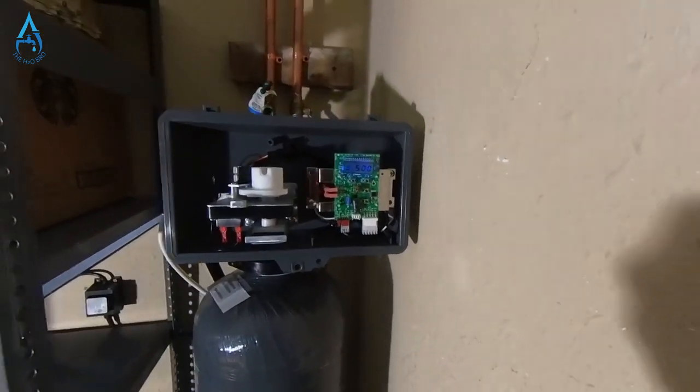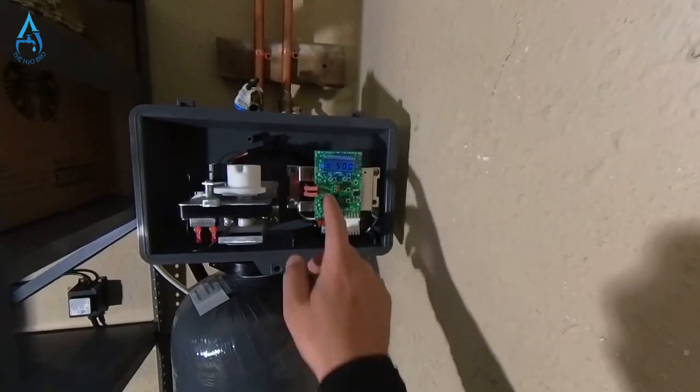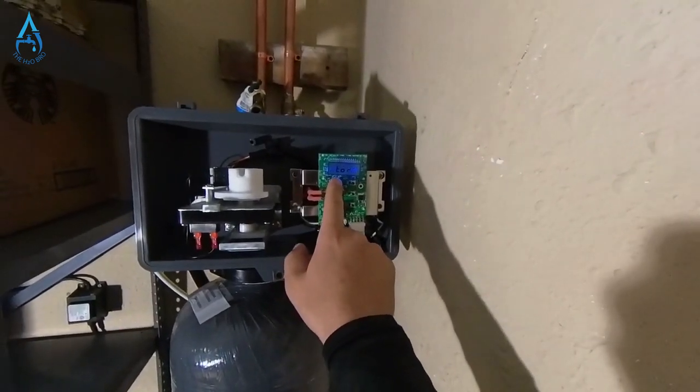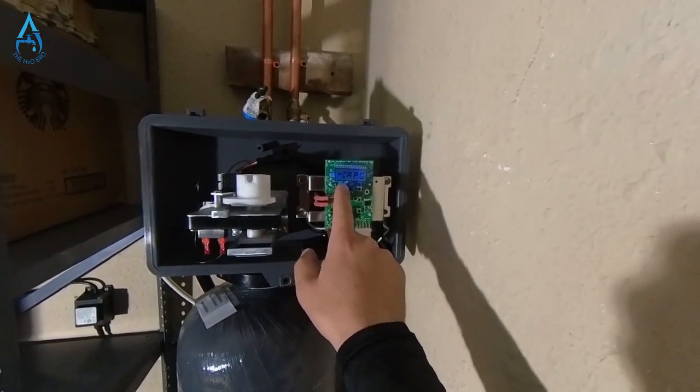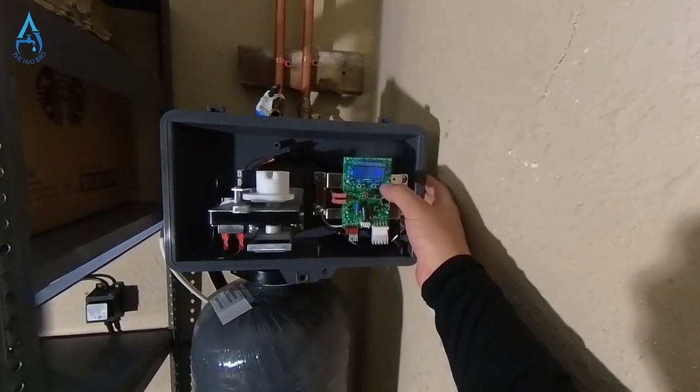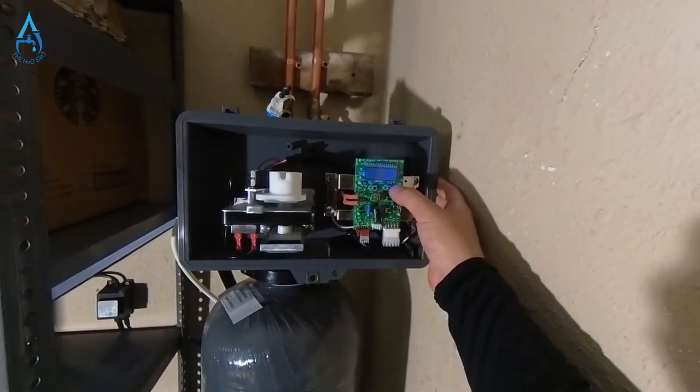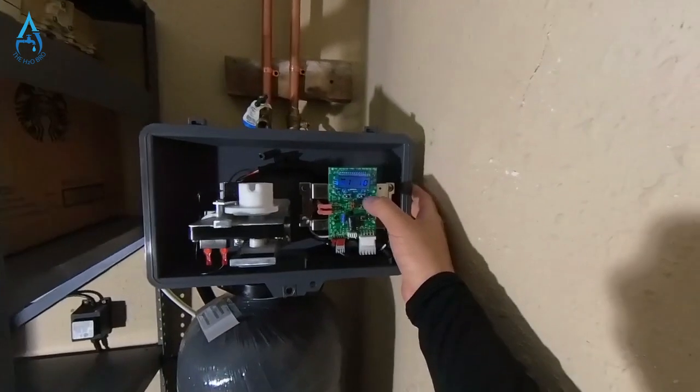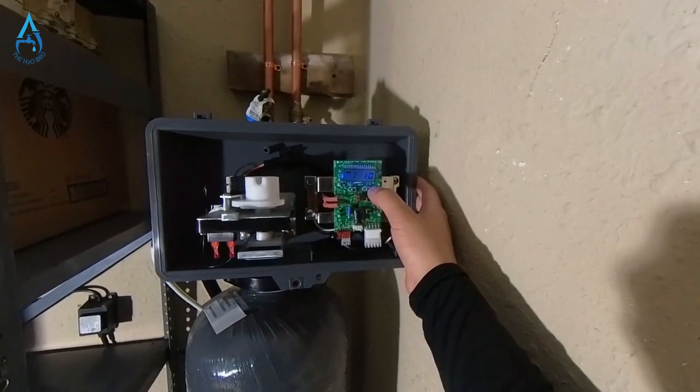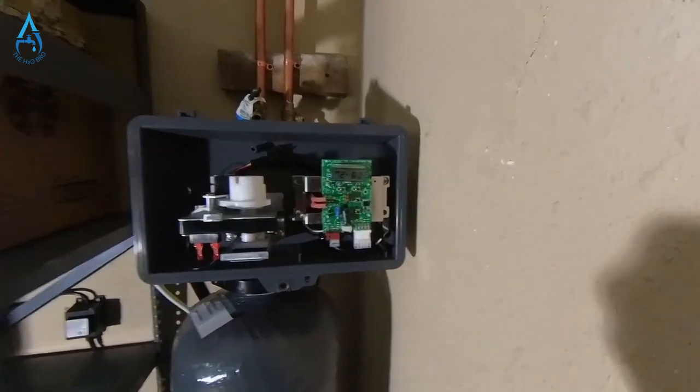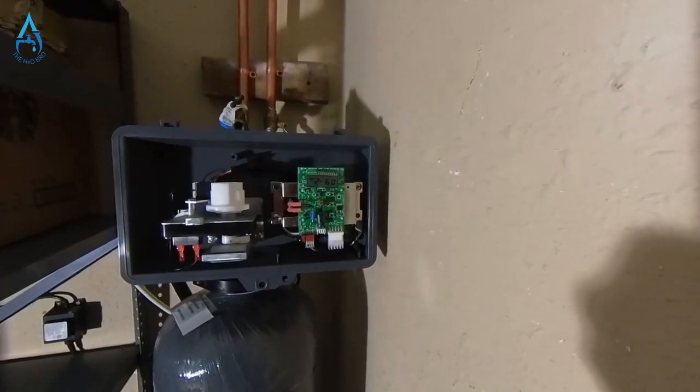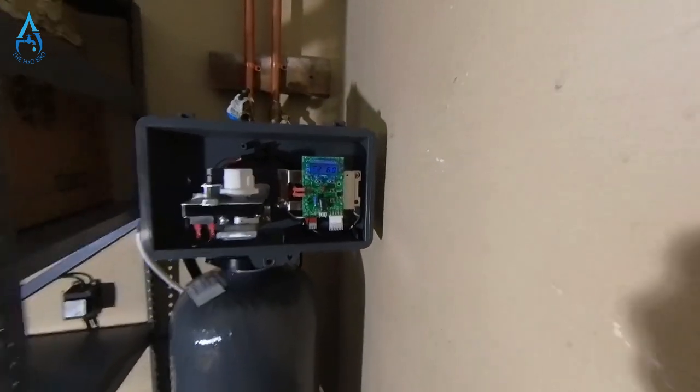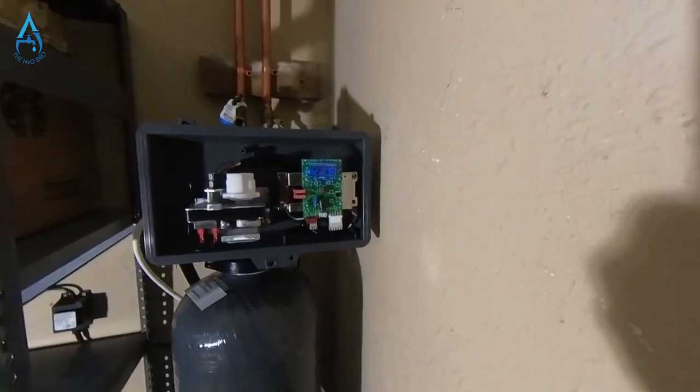Then you're going to find the brine rinse cycle. So you're going to go again on the home screen, the home button, until you get to the blank screen. Then you're going to press up, which is the furthest button from the three here. It's going to say one and ten, then you're going to hit up again. You're going to get two and sixty - that is the brine rinse cycle.